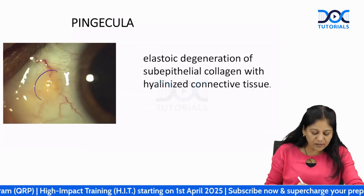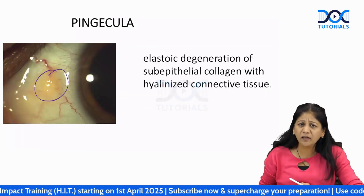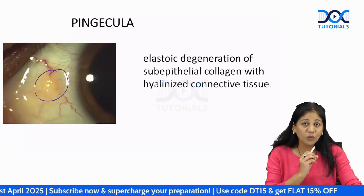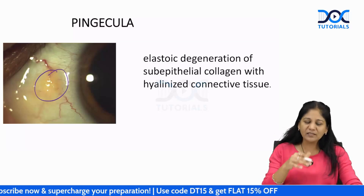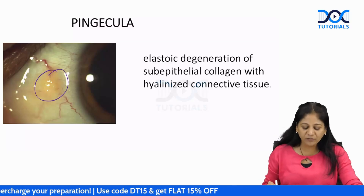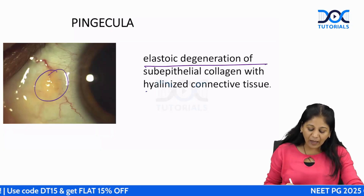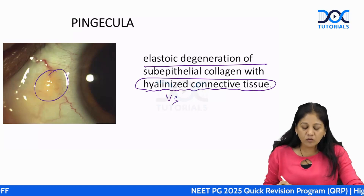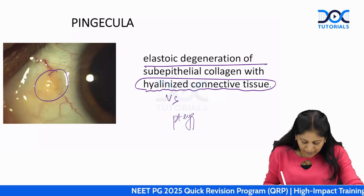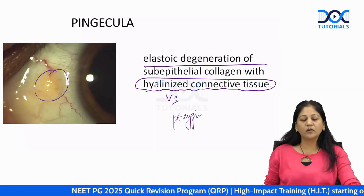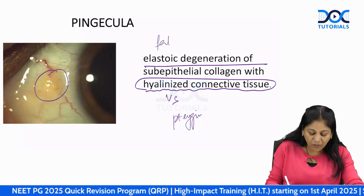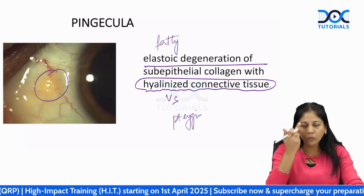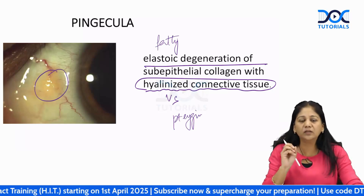The next nodular lesion near the limbus may look like a phlycten but is actually a pinguecula — a precursor of pterygium. It involves elastotic degeneration, unlike pterygium. There is no hyalinization of connective tissue. Basically it is a fatty accumulation in the nasal or temporal part of the conjunctiva near the limbus, giving the appearance of a nodule.